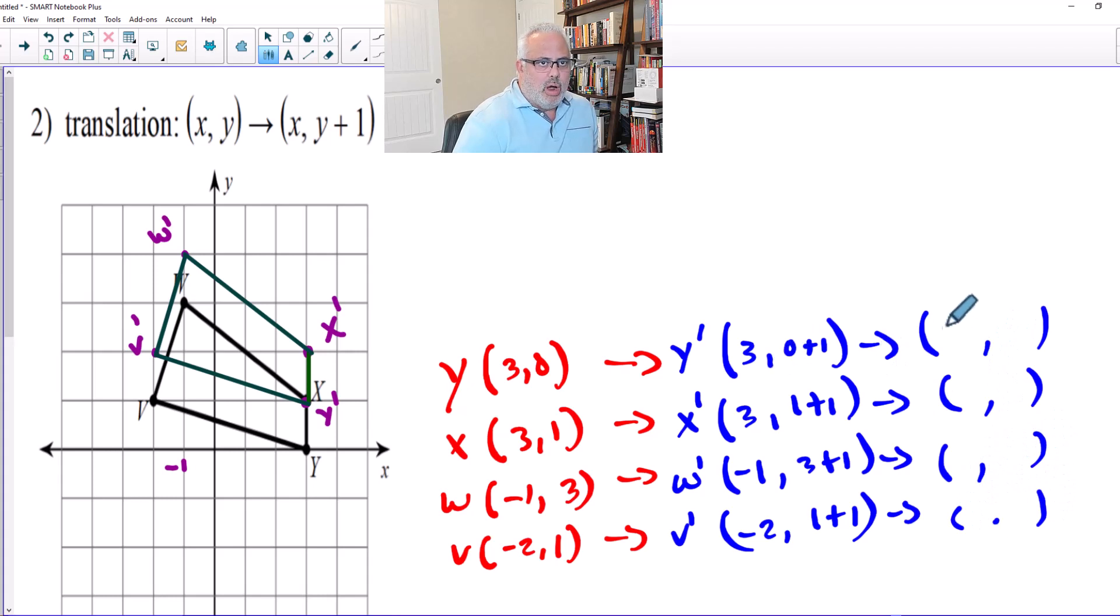So it's going to be (3, 1), (3, 2), (-1, 4), (-2, 2). Let me check. Y-prime is located at (3, 1). Perfect. X-prime is located at (3, 2). Perfect. W-prime is located at (-1, 4). And V-prime is located at (-2, 2). Perfect.